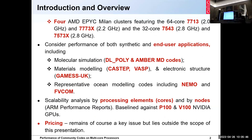We look at seven applications in total — hence 100 slides and the impossibility of getting through them all. The organizers have kindly agreed to wave fingers at me with 10 minutes to go, because I'll need 10 minutes to conclude. We'll be looking at molecular simulation: DL_POLY and AMBER; materials modeling: CASTEP and VASP; electronic structure: GAMES UK; and two ocean modeling codes: NEMO and FVCOM. An important point when analyzing performance is whether you do it by cores or by nodes.